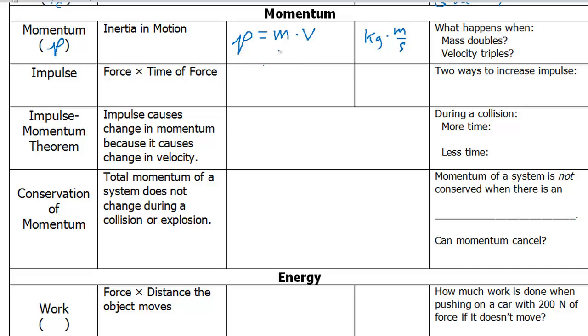Looking at this relationship, we can see that momentum is directly proportional to mass and also directly proportional to velocity. So what happens when mass doubles? The momentum will also double. What happens if velocity tripled? The momentum will triple.